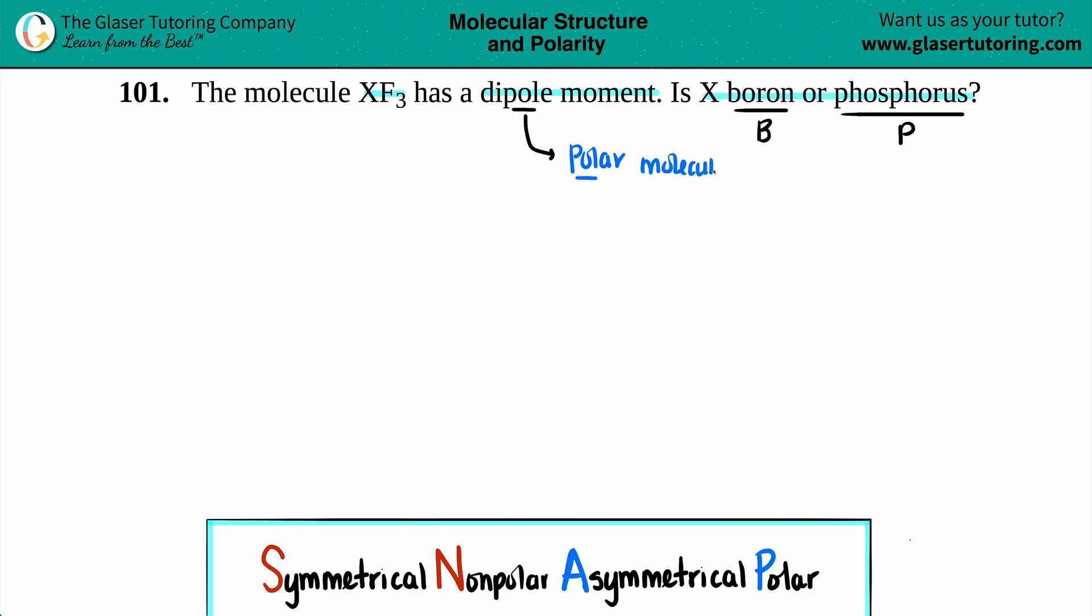So basically, we just have to figure out if boron was in this place, would it be polar, or if phosphorus was in this place, would it be polar? Now, in order to answer this question, the easiest way to do it is to just take a second and draw the Lewis structure.